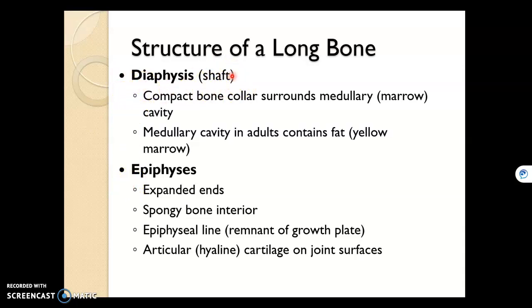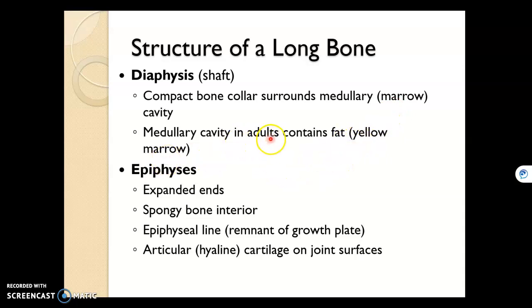Inside the shaft, which is compact bone, we have a cavity — a space called a medullary cavity — where marrow is located, either red or yellow. Mostly yellow if we're talking about adults.